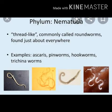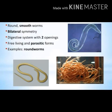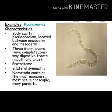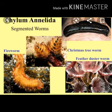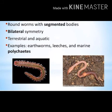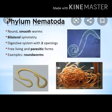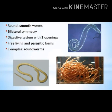Phylum Nematoda are long, cylindrical, unsegmented worms with a fluid-filled false body cavity — not a true coelom. The alimentary canal opens at both ends, with a mouth and anus. They are mostly parasitic, but some live free in the soil. Examples include Ascaris in humans, hookworm, and eelworm in potato plants.